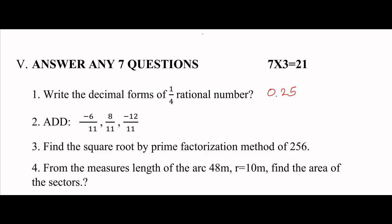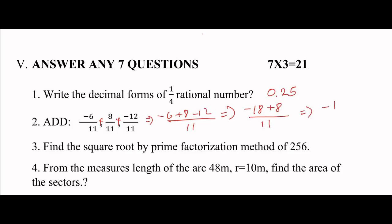Next: add (-6/11) + (8/11) + (-12/11). The denominator is the same, so we add the numerators: (-6) + 8 + (-12) = -6 - 12 + 8 = -18 + 8 = -10. So the answer is -10/11.